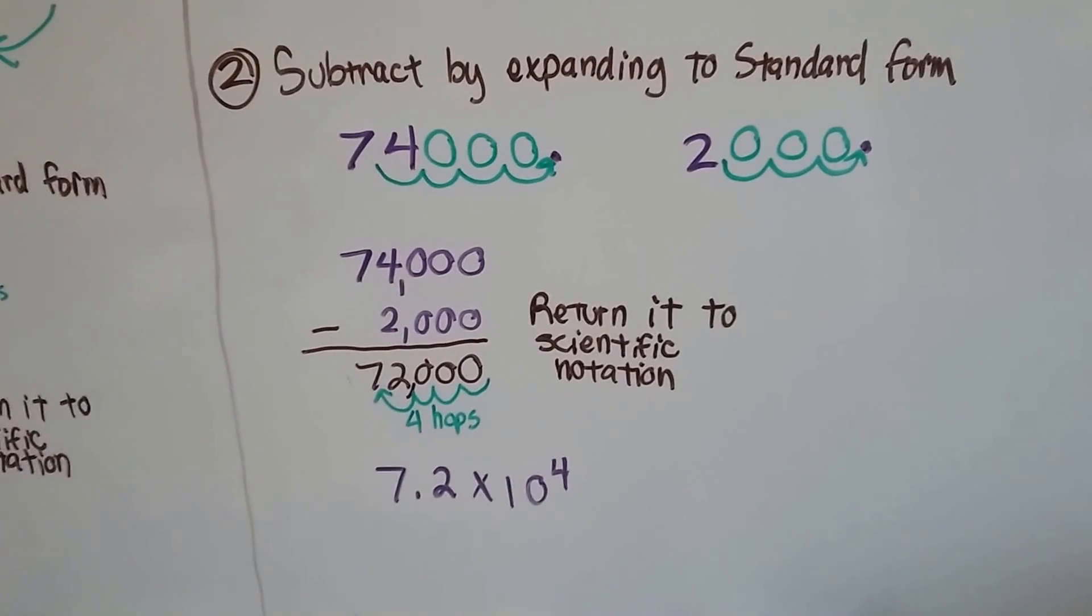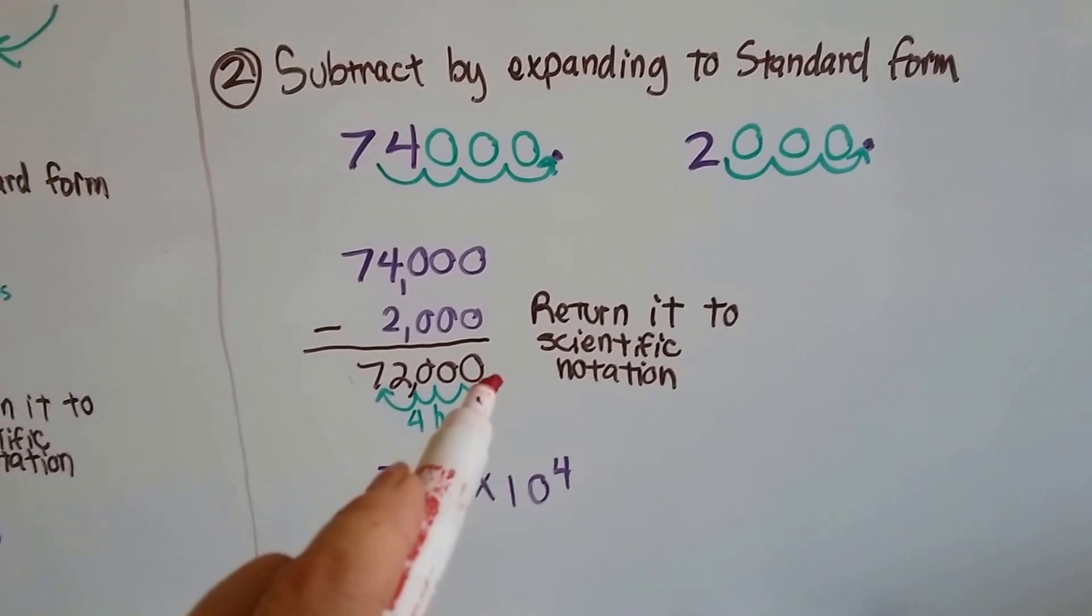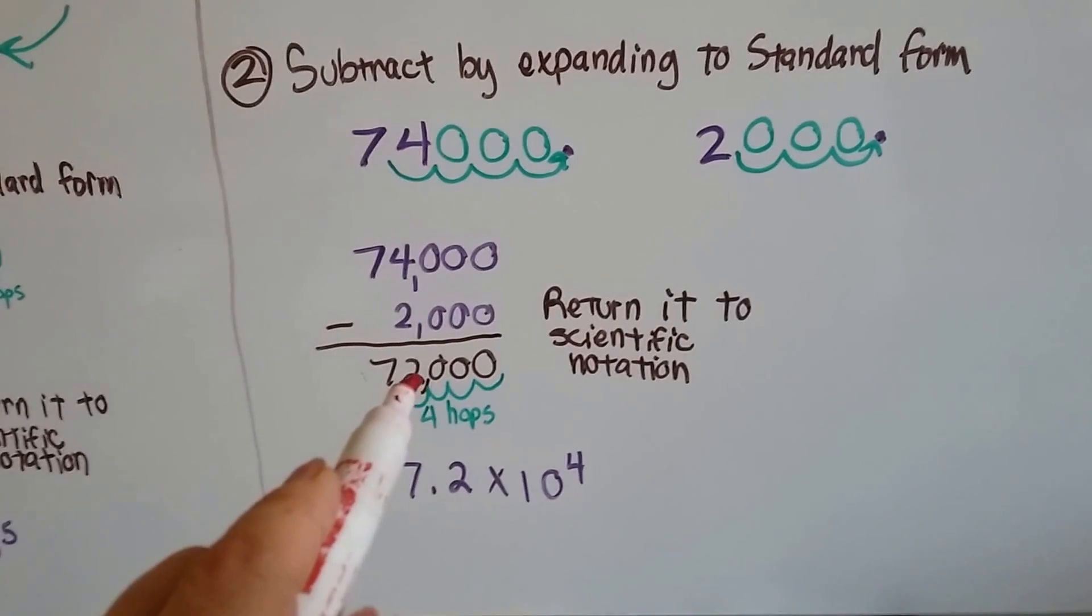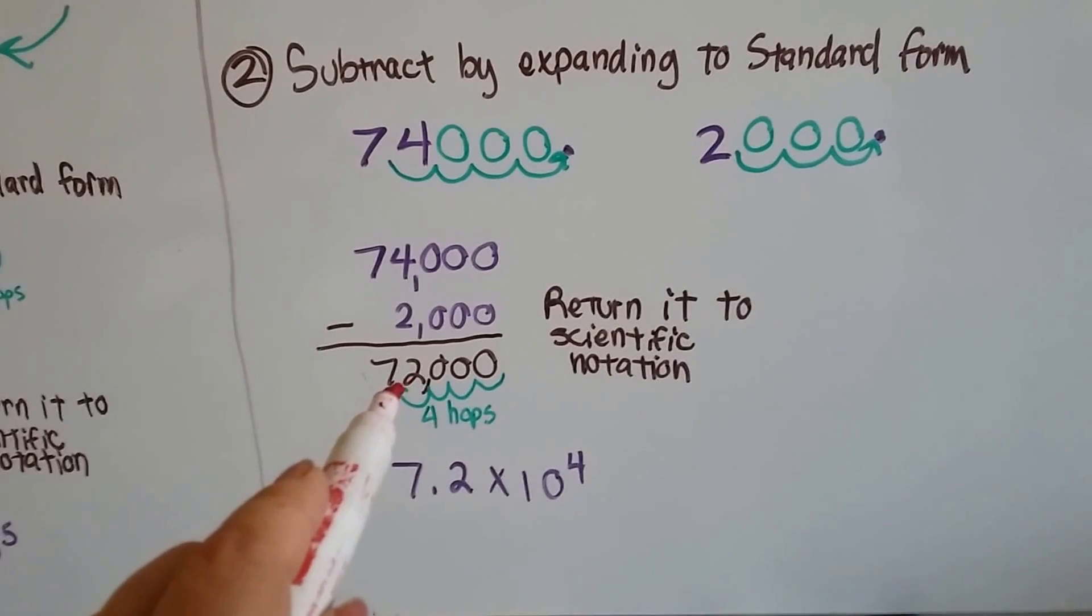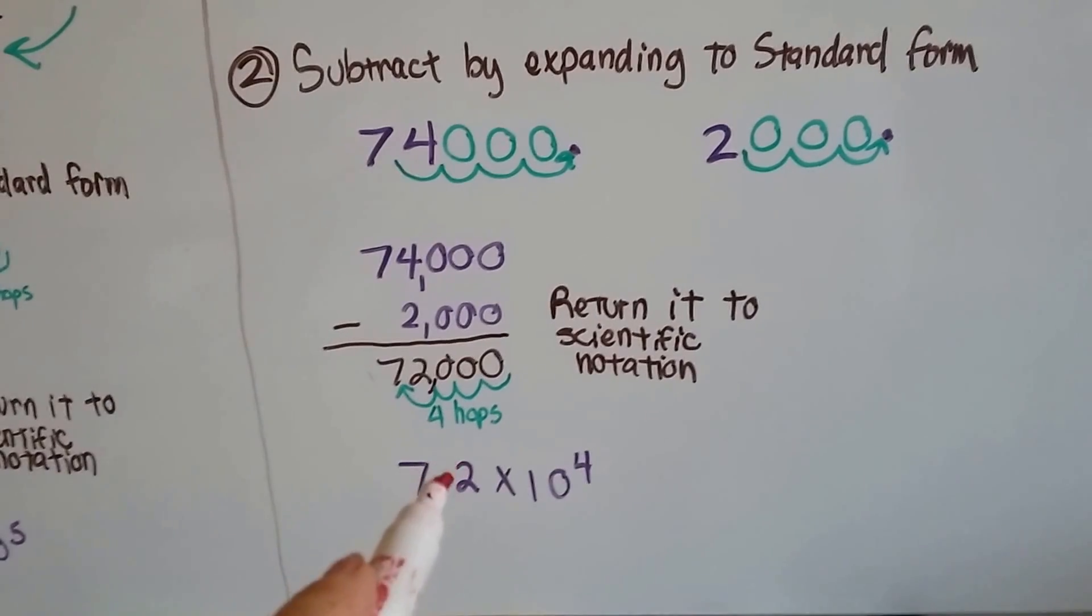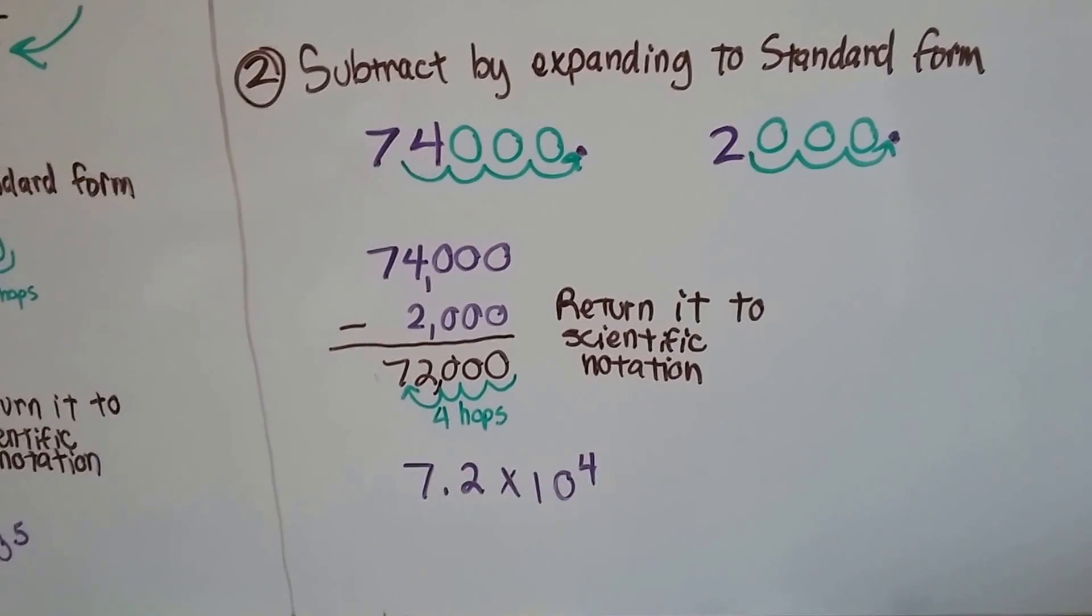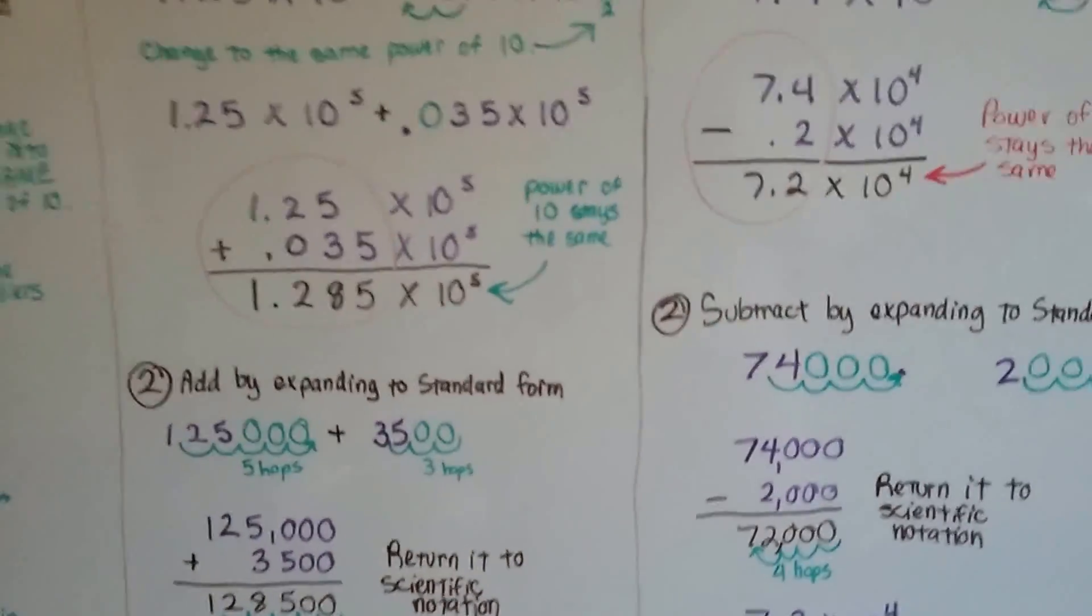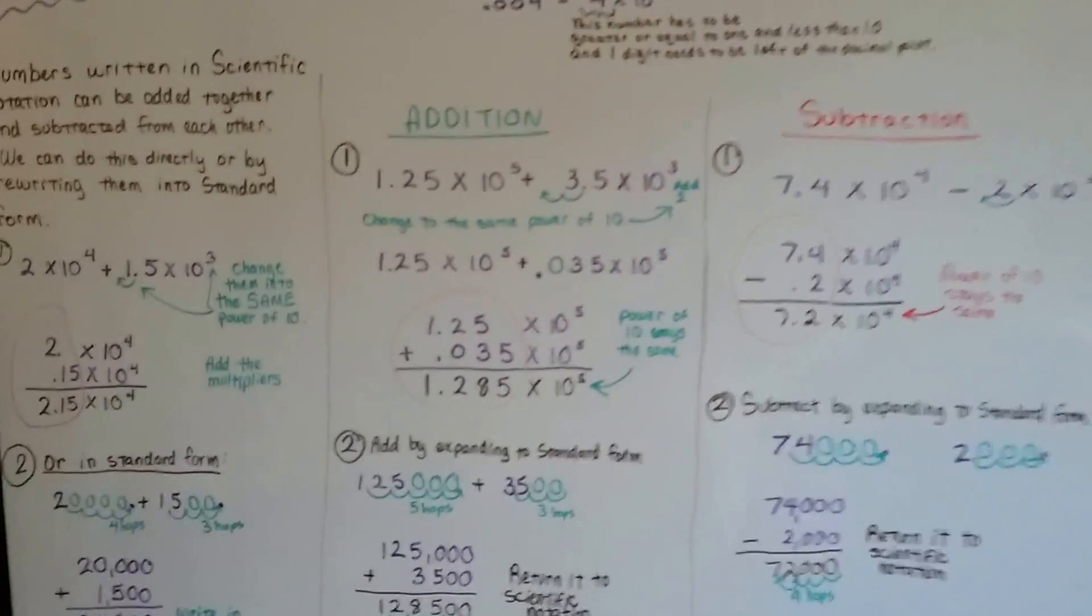We return it to scientific notation and we go from back here where the decimal point is to 1, 2, 3, 4 hops. So the decimal point's between the 7 and the 2, and because we went 4 hops, we've got 7.2 times 10 to the 4th power. Was that real bad? I don't know. It wasn't that bad, was it?